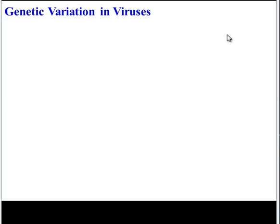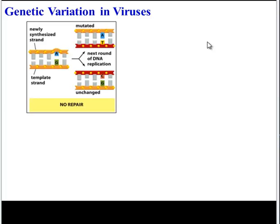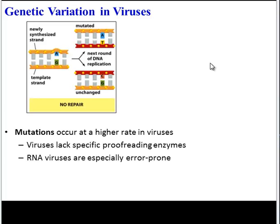One final note: viruses are very good at increasing genetic variation. First of all, they mutate just like other cells. But unlike cells, viruses lack specific proofreading mechanisms. In eukaryotic cells and even prokaryotes, there are special enzymes that can fix mutations, but those enzymes aren't present in viruses. RNA viruses are especially error prone, and this is one reason why viruses can evolve so quickly — all of these mistakes happen much faster than in our cells.